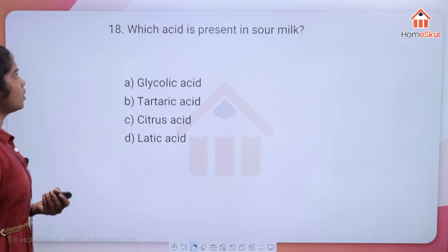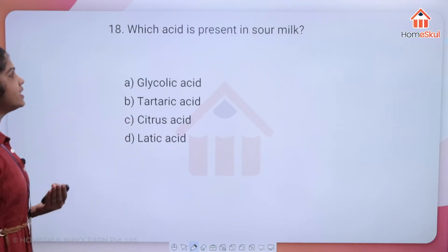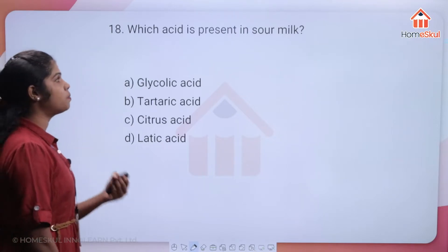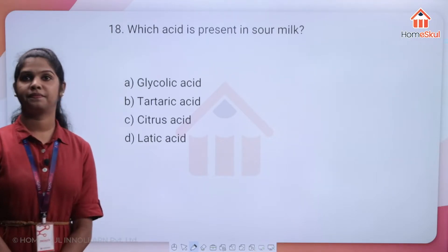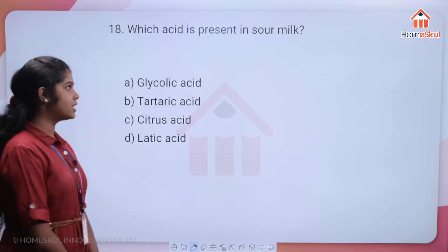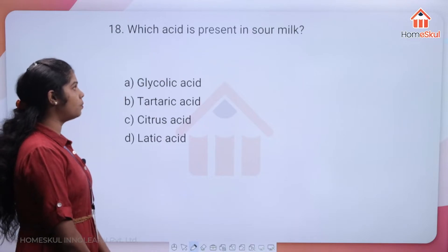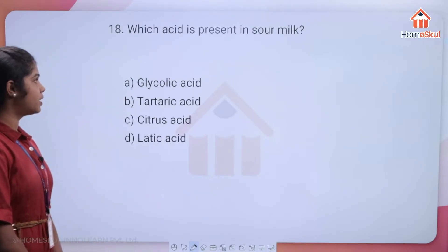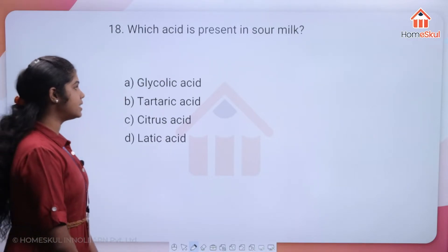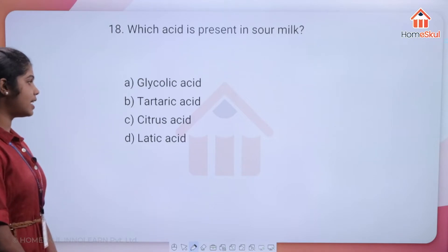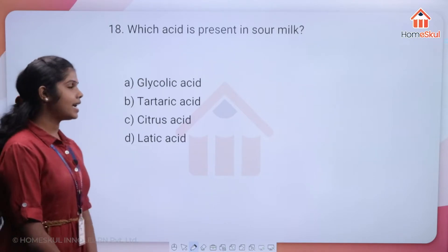Question 18: which acid is present in sour milk? The options are glycolic acid, tartaric acid, citric acid, and lactic acid.